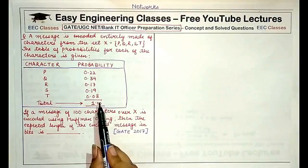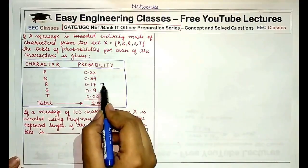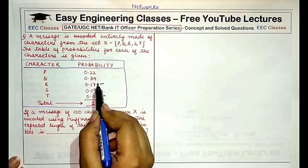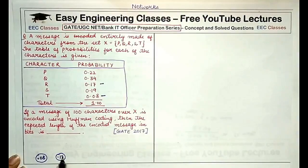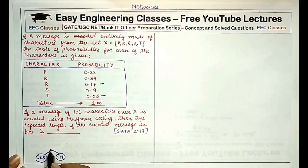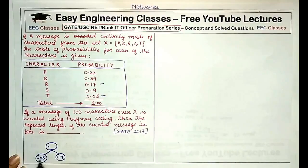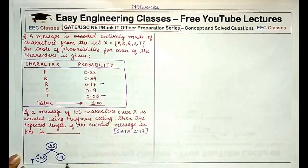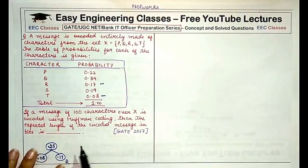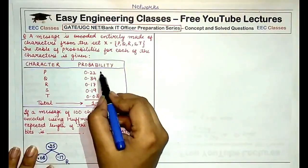Out of these probabilities, the least probability is 0.08 and 0.17. So we make two nodes having probabilities 0.08 and 0.17 and combine them together to a node which has the sum of the two, which would be 0.25. 0.08 is representing the character T and 0.17 is representing R.